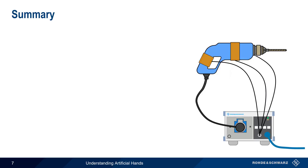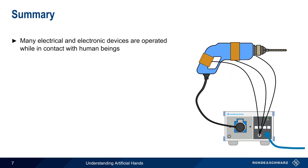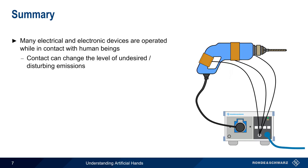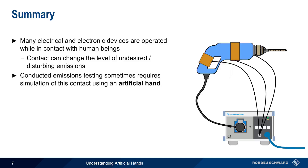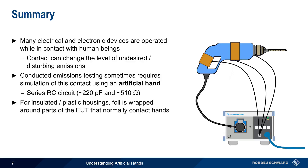Let's end with a brief summary. Many electrical and electronic devices are operated while in contact with part of the human body, most often the hand. This contact can change the levels of undesired or disturbing emissions produced by the equipment under test. For this reason, some types of conducted emissions testing require simulation of this contact by means of a so-called artificial hand. This is modeled as an RC circuit consisting of an approximately 220 picofarad capacitor in series with an approximately 510 ohm resistor. For devices with insulated housings, foil is wrapped around those parts of the EUT that normally come in contact with human hands. Any exposed metal parts are directly connected to the RC circuit as well.